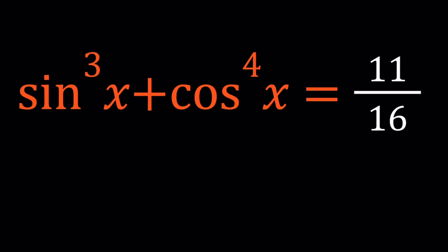We have sine x to the third power plus cosine x to the fourth power equals 11 over 16, and we're going to find the x values — the angles — for which this is true.